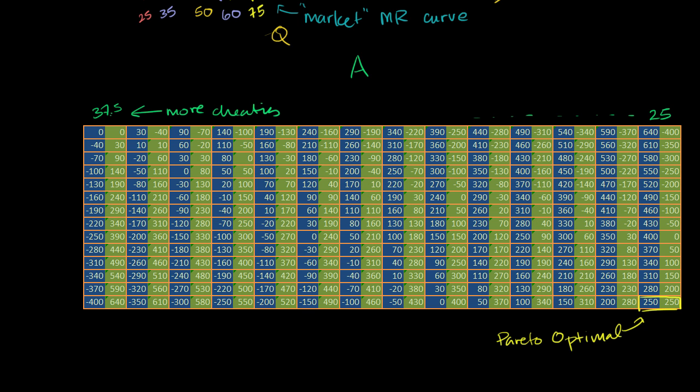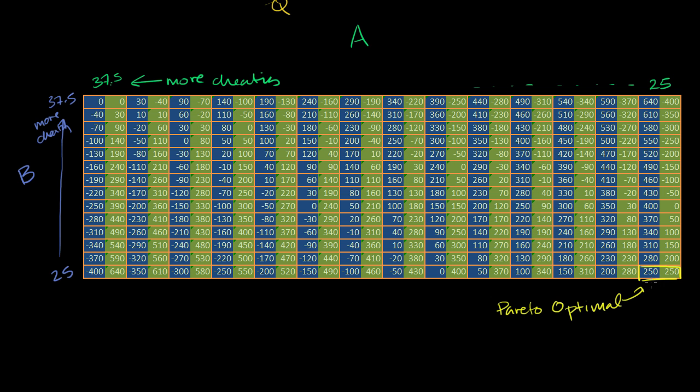We can do the same thing for the blue player. This is them producing 25, this is them producing 37.5, and as we go up, they are cheating more. So to think of it in a game theoretical way, this is the Pareto optimal state right over here. It's optimal in many ways. They've maximized the total economic profit here. There's no other state that one person would benefit without making the other worse.